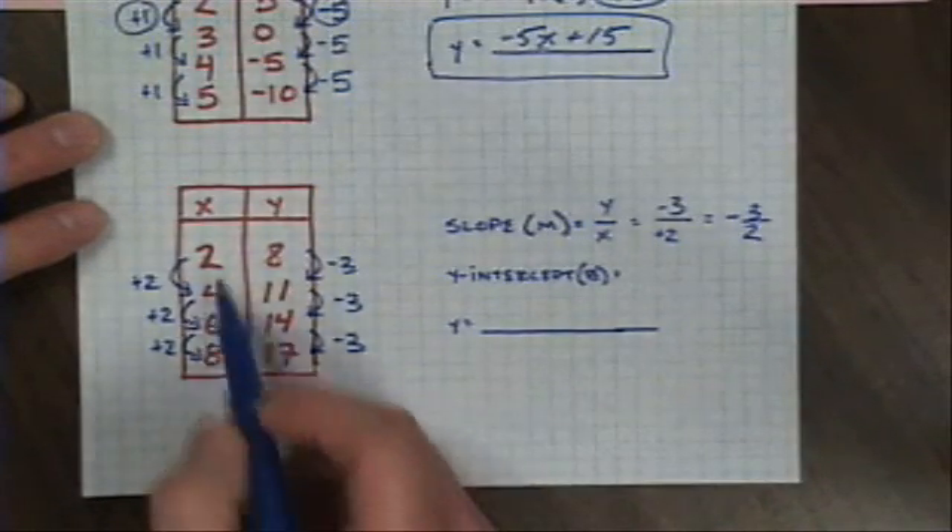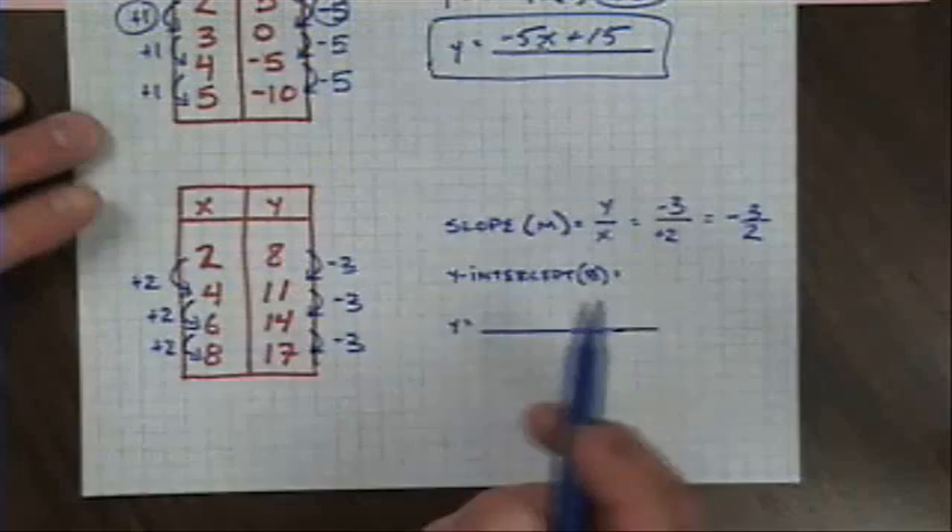Now, to find out my y intercept, I have the same kind of idea here. I still don't have my 0. But again, I'll just follow my pattern. 8, 6, 4, 2, counting back by 2 every time. It takes me right to 0. That's kind of nice.